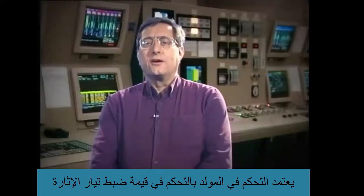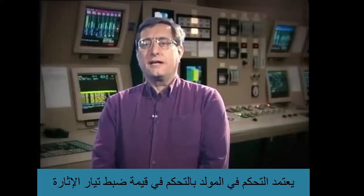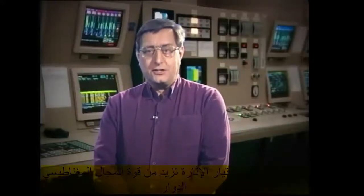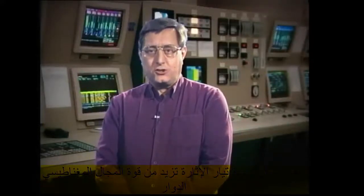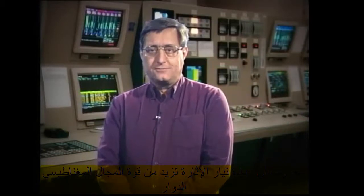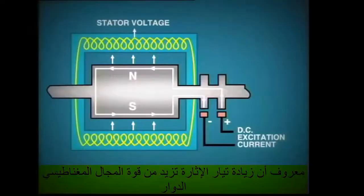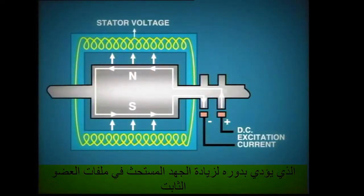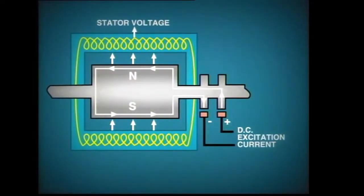Control of the generator output voltage is affected by adjusting the magnitude of excitation current. We already know that increasing excitation results in an increase in the strength of the rotating magnetic field. This in turn brings about an increase in the voltage which is induced into the stator conductors.